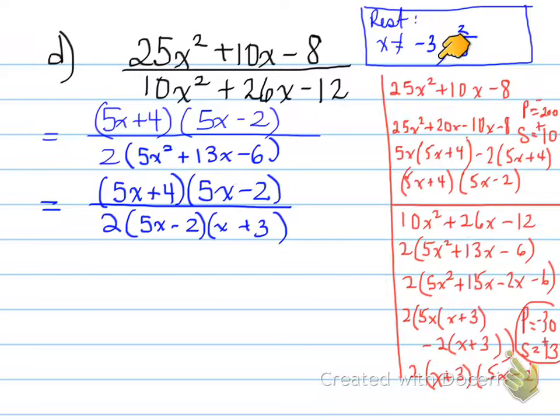So now we have figured out the factors of both the numerator and the denominator. Before we cancel, we can see the restrictions. What is our license to restrict? Well, let's see, x cannot equal negative 3, and x cannot equal 2 over 5. That's our license to cancel.